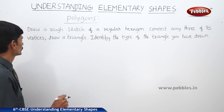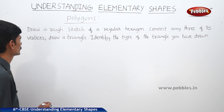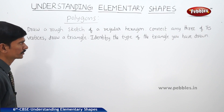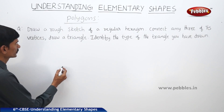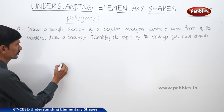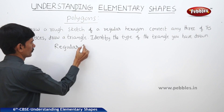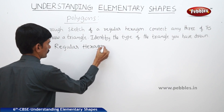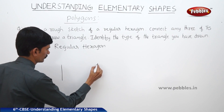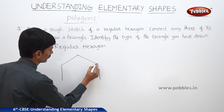Now let us see the next question: draw a rough sketch of a regular hexagon, connect any three of its vertices, draw a triangle, and identify the type of triangle you have drawn. So first let us draw the rough sketch of a regular hexagon. A regular hexagon has six sides, and all the six sides are of equal length.